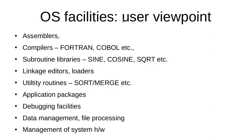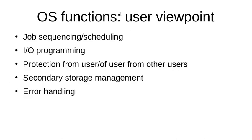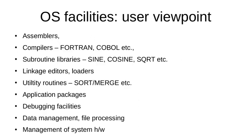Next are the facilities from the user's viewpoint. It doesn't mean every OS must have these facilities, but most modern OSes come with almost all of them pre-included. These include assemblers, compilers such as Fortran, COBOL, C, and C++, subroutine libraries like sine, cosine, and sqrt, linkage editors, loaders, utility routines such as sort and merge, application packages for application software, debugging facilities, data management and file processing capabilities, and management of system hardware.